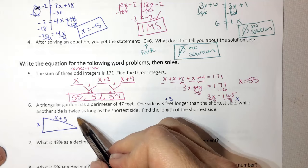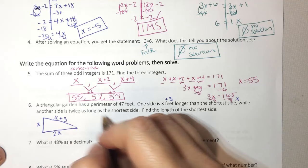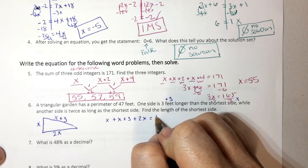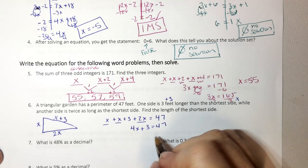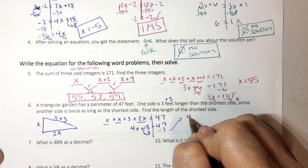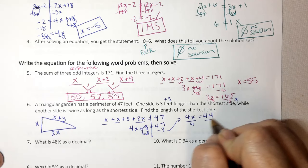And then the other side is twice as long as the shortest side. Well, twice is two times, so 2x. Perimeter means I add all the sides. So x plus x plus 3 plus 2x equals 47 as my perimeter. x plus x is 2x plus 2x is 4x. Bring down my plus 3 equals 47. And now I solve. So minus 3, minus 3 because I'm moving to the opposite side. Divide both sides by 4. And I get x equals 11.